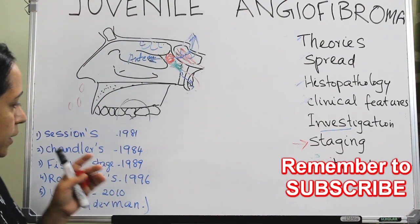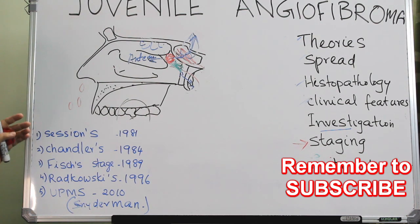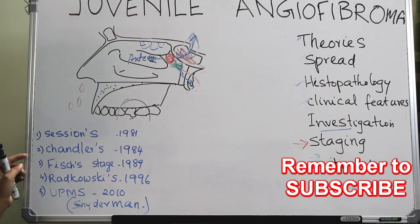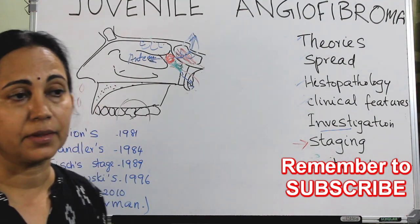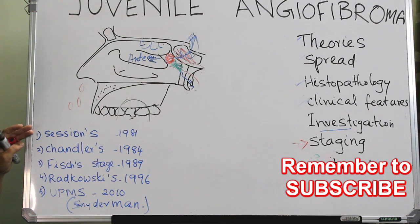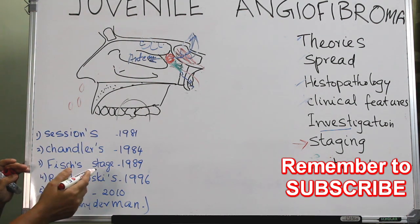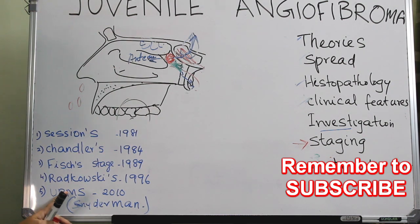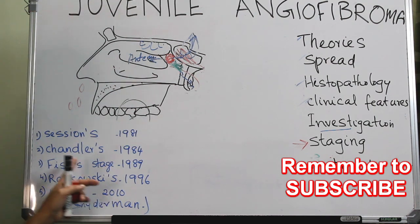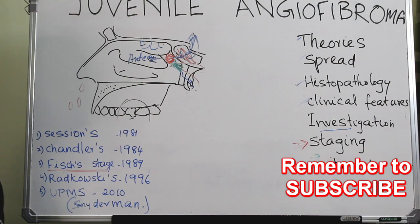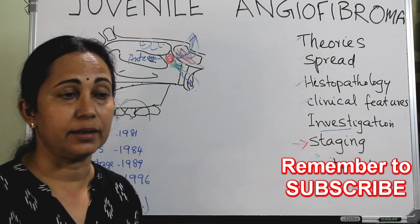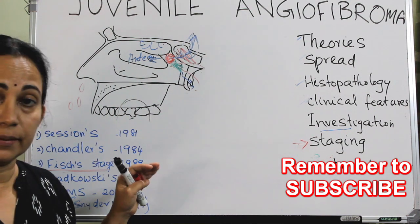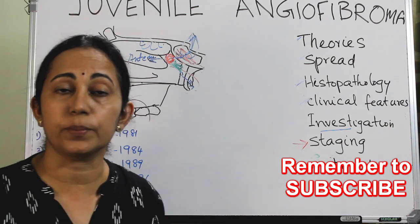There are many named systems for staging — Session staging in 1981, Chandler's in 1984, Fisch staging, Ratkovsky staging, and the University of Pittsburgh Medical System by Snidermann in 2010. Of these, Fisch staging is the most robust and practical for staging of JNA, as noted in Scott-Brown's textbook.